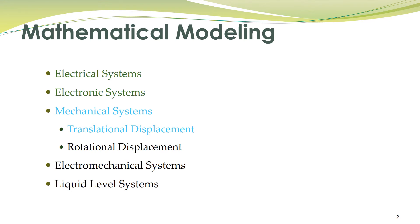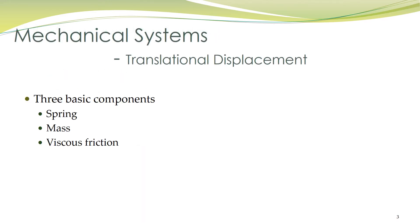In today's lecture we shall talk about mathematical modeling of mechanical systems. Basically there are two types of displacements in mechanical systems: translational displacement and rotational displacement. In today's lecture we shall discuss mathematical modeling of mechanical systems with translational displacement. Like in electrical circuits where there are three basic components — resistor, capacitor, and inductor — in mechanical systems there are also three basic components.